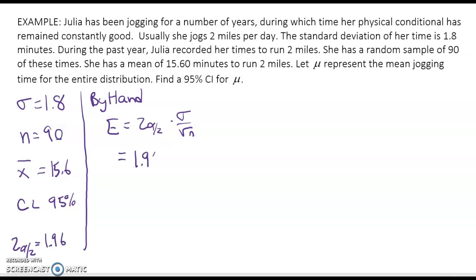So now I can just fill in the formula. We'll have 1.96 times 1.8 over the square root of 90. And when we put that in our calculator we'll get E equals 0.372.